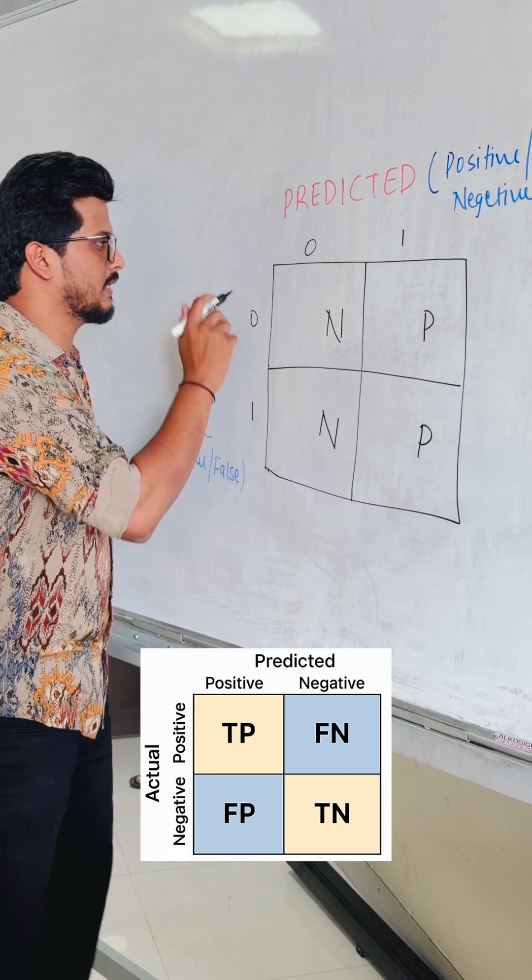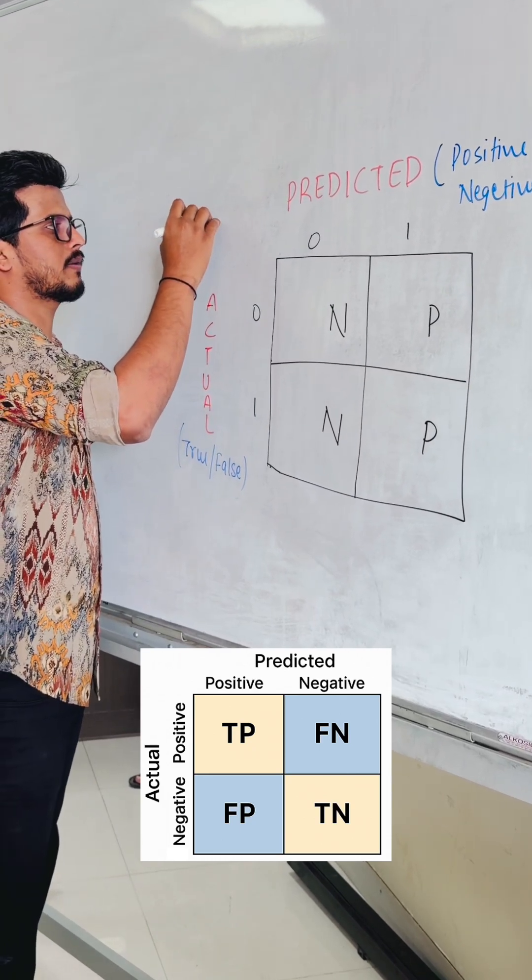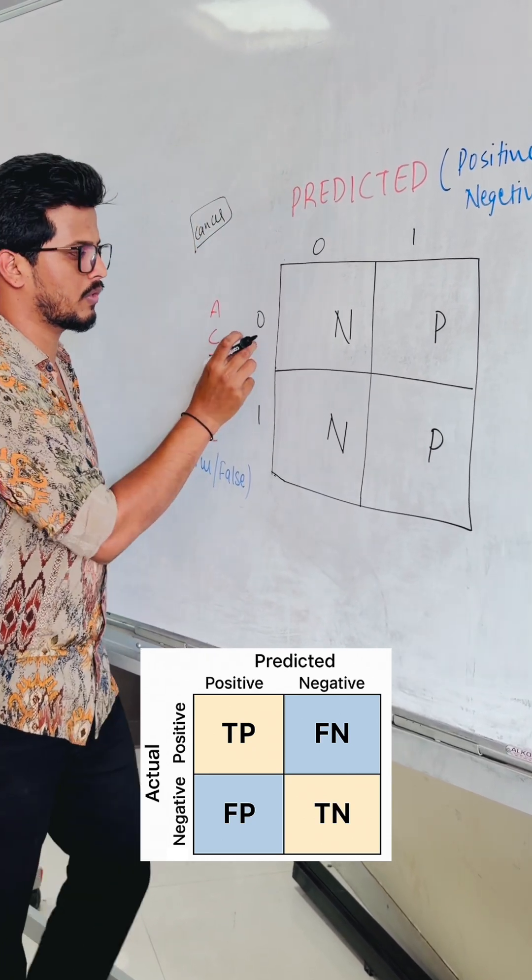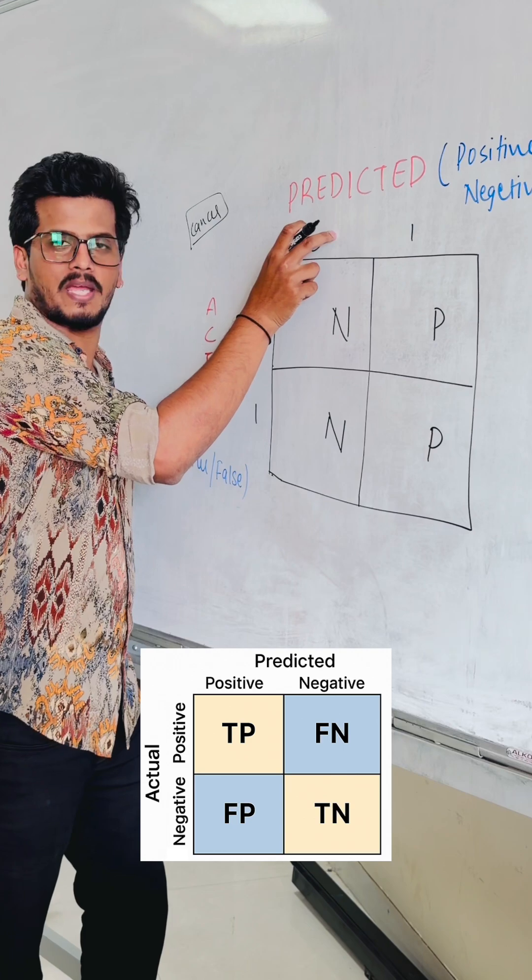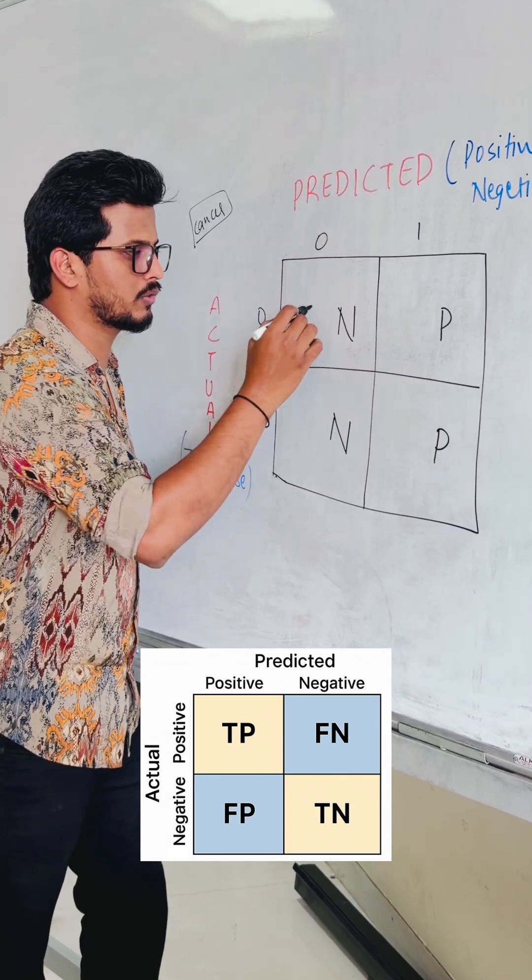Now, the actual value was 0. That is, we have taken an example of cancer. Cancer is not and predicted it is not cancer. This means it is true, right? So this is true.